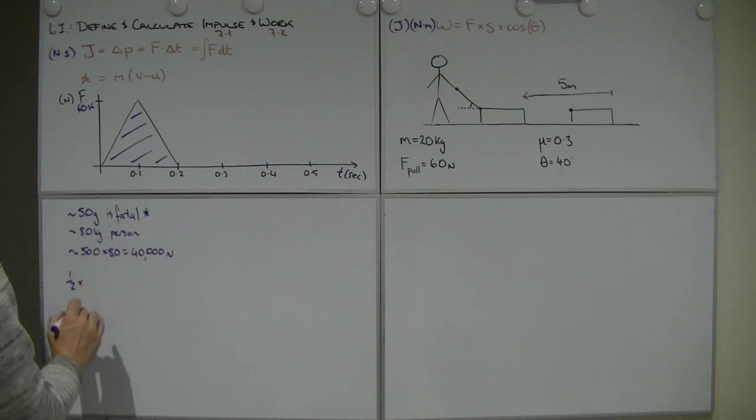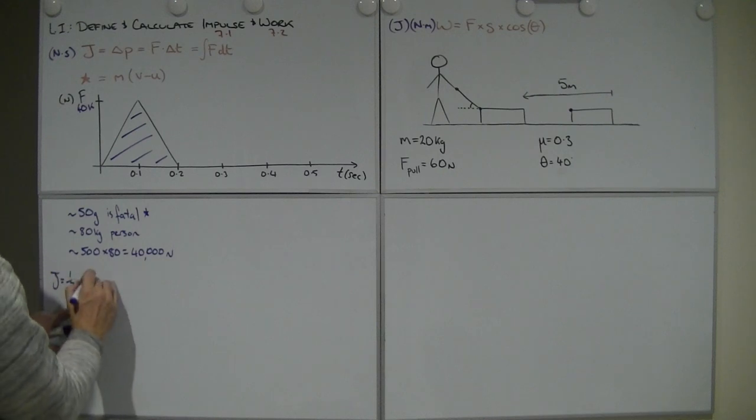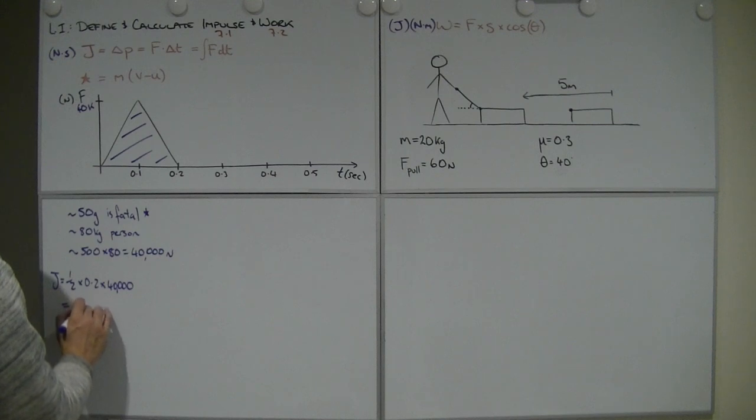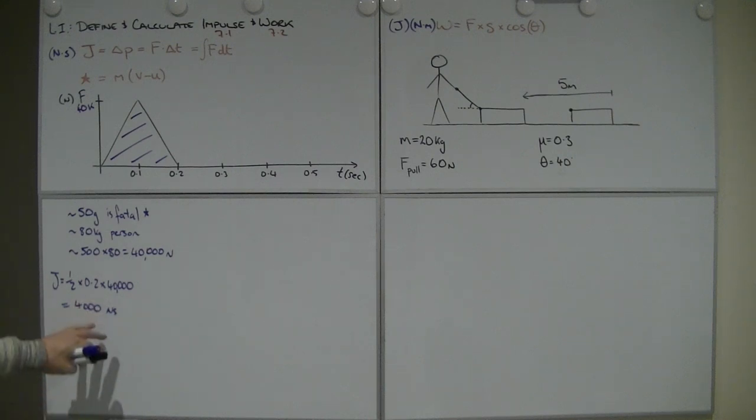J equals half base of 0.2 times height of 40,000. Equals 0.1 times 4,000. So we've got 4,000 newton seconds of impulse. That is a bit more of a fiddly number to think about by itself. What we were really worried about was this peak force, because that's telling us we're dead.